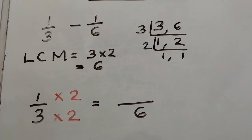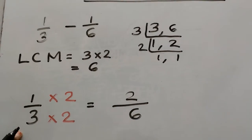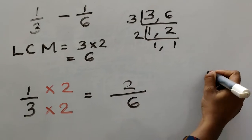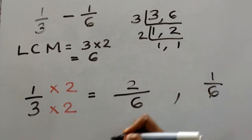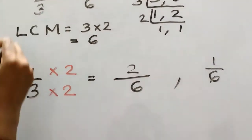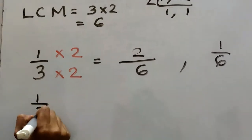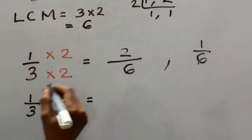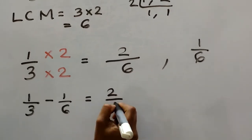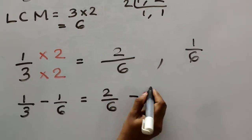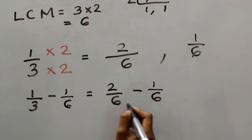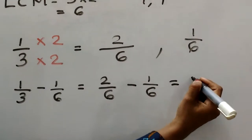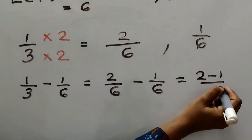This fraction has a denominator of 6. For 1 by 3 minus 1 by 6, we convert 1 by 3 to 2 by 6. Now both denominators are the same, so we subtract the numerators: 2 minus 1 by 6, which gives us 1 by 6.